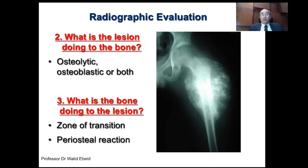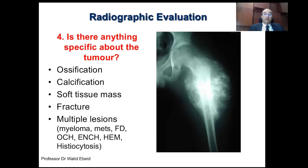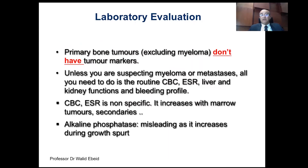The third question — what is the bone doing to the lesion? — refers to the zone of transition or margin, and the periosteal reaction. It's either an ill-defined margin or a well-defined margin. In this X-ray, it is definitely an ill-defined margin. The periosteal reaction is evident — you see a Codman's triangle and a sunburst appearance. The fourth question asks: is there anything specific about the tumor? You look for ossification, calcification, soft tissue mass, any fracture, or multiple lesions in the same or surrounding bones. In this case, there is evident ossification inside the bone and in the periosteal reaction.